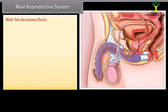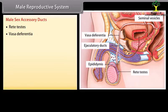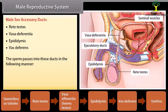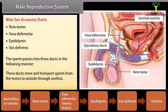The male sex accessory ducts include the rete testis, vasa efferentia, epididymis, and vas deferens. Sperm passes through these ducts in the following order: seminiferous tubules → rete testis → vasa efferentia → epididymis → vas deferens → urethra. These ducts store and transport sperm from the testes to the outside through the urethra.